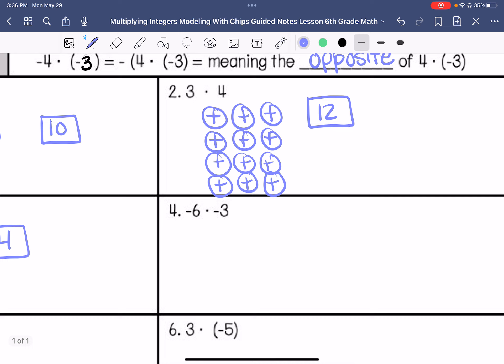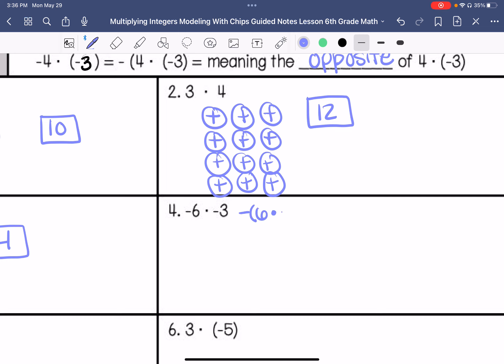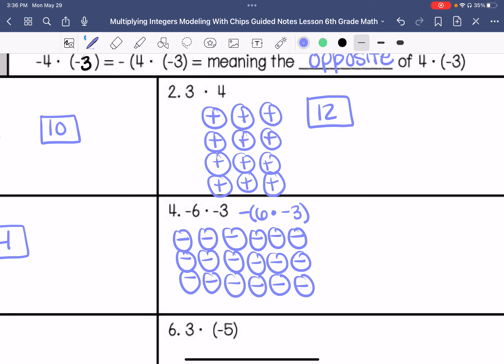Alright, this is where we have the double negatives. So I'm going to say that we have 6 groups of negative 3. Alright, so if I count these all up, this is negative 18. And then I'm looking for the opposite of negative 18.